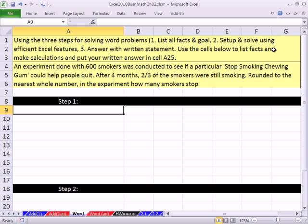These are the instructions, just like you'll see on the test. It says be sure to do the three steps, which we'll do here. Here's the problem: An experiment done with 600 smokers was conducted to see if a particular stop smoking chewing gum could help people quit. After four months, 2/3 of the smokers were still smoking. Rounded to the nearest whole number, in the experiment, how many smokers stopped?